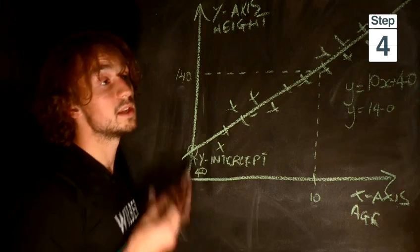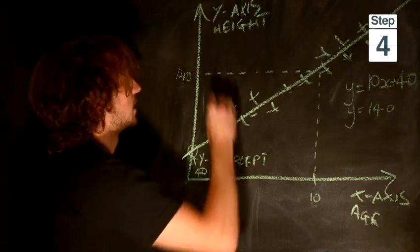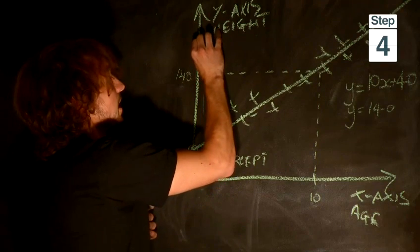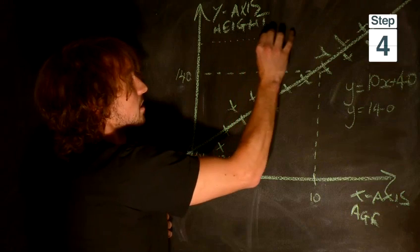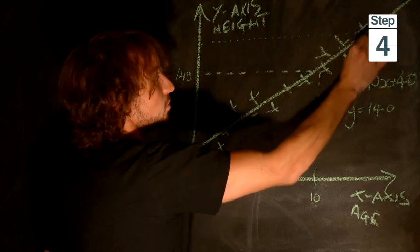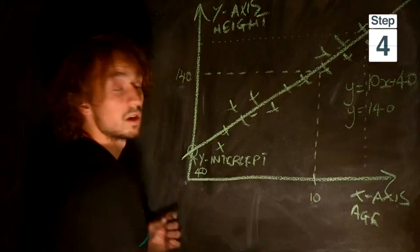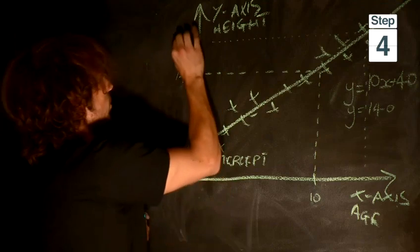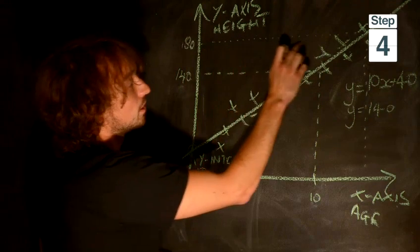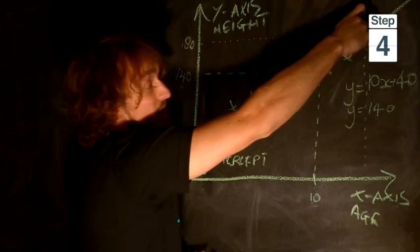Now, there's one more thing you can do. Let's say you have a child whose height is 180 centimeters and you want to work out roughly how old that child is. So you draw along from your 180, you draw along here until you hit the line of best fit. Exactly the same.